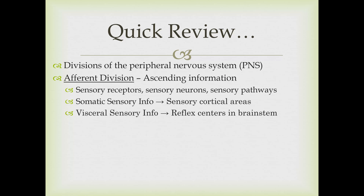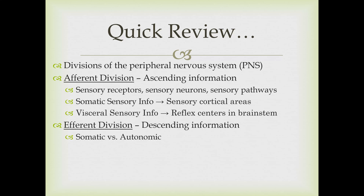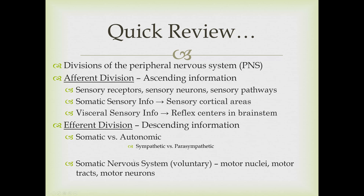Your visceral sensory info was covered last semester with the autonomic nervous system, and that information goes up to reflex centers in the brain stem, though we'll mention it briefly again in this chapter. The efferent division—the descending information going from the brain down to the body—is divided into the somatic and autonomic divisions. The autonomic divisions were covered last semester in chapter 16. In chapter 15, we'll talk about the somatic division, which carries information to skeletal muscles—we call this the somatic nervous system.